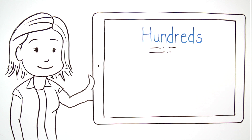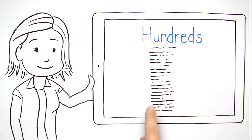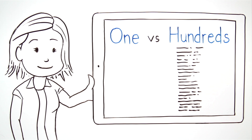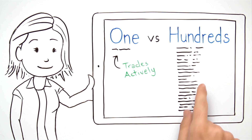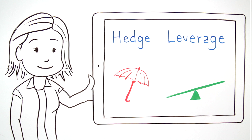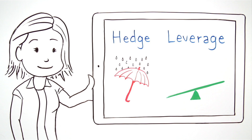Instead of purchasing hundreds of bonds, investors purchase a single ETF which trades actively on an exchange. Market participants also needed a way to hedge their cash bond market exposure and place leveraged positions.